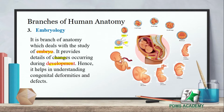The zygote divides through a 2-cell stage, then 4-cell stage, 8-cell stage, then 16-cell stage, and then blastocyte. After the blastocyte stage, cell organs start to differentiate — which we call the embryo. The embryo then develops into a fetus and eventually a baby.